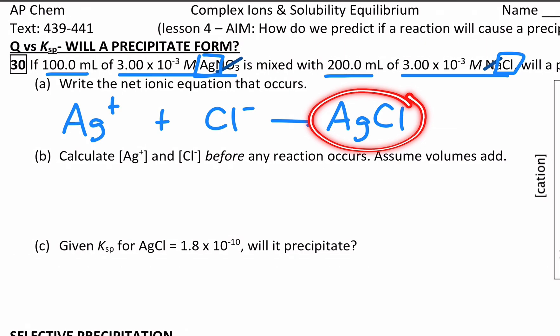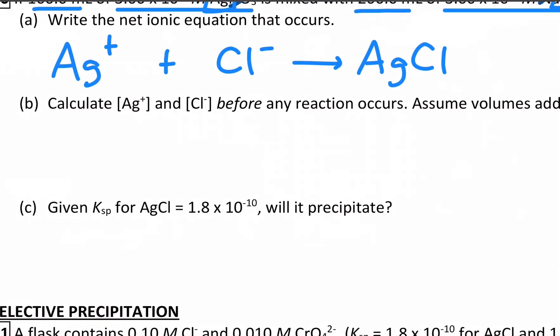This might be something that an environmental chemist might be interested to figure out, or, at least for us, an AP chemist. So to do this, we can look at the Ksp value for silver chloride and compare it with where we are at this point. We're going to start by getting the concentrations of each ion after they've mixed, but before any hypothetical reaction has happened.